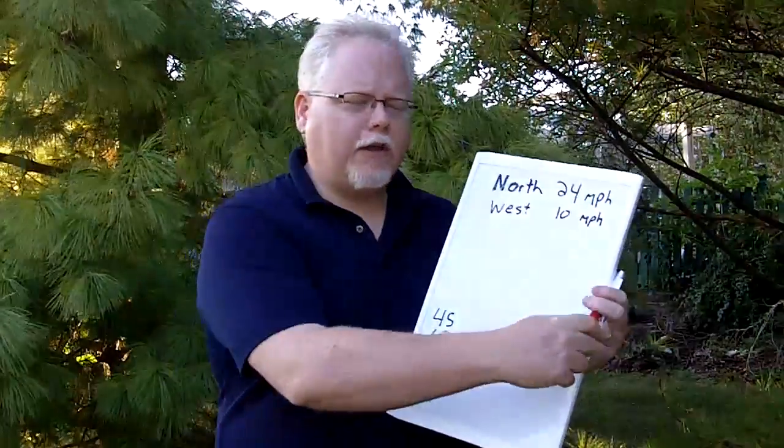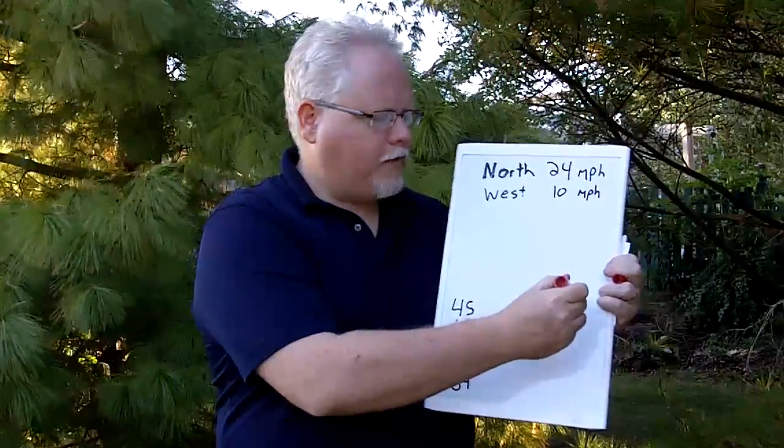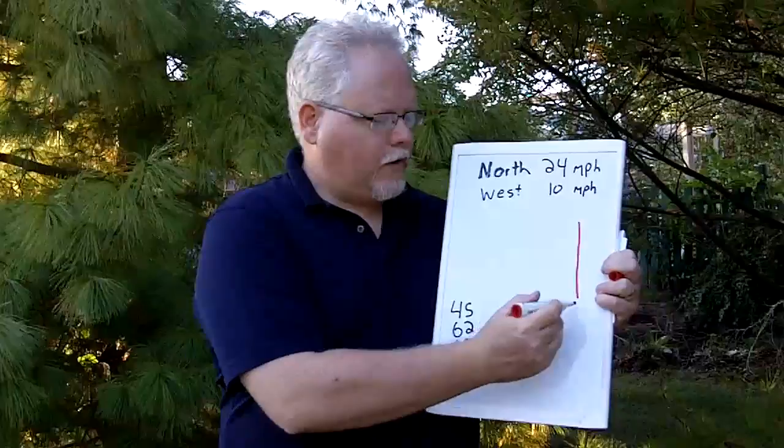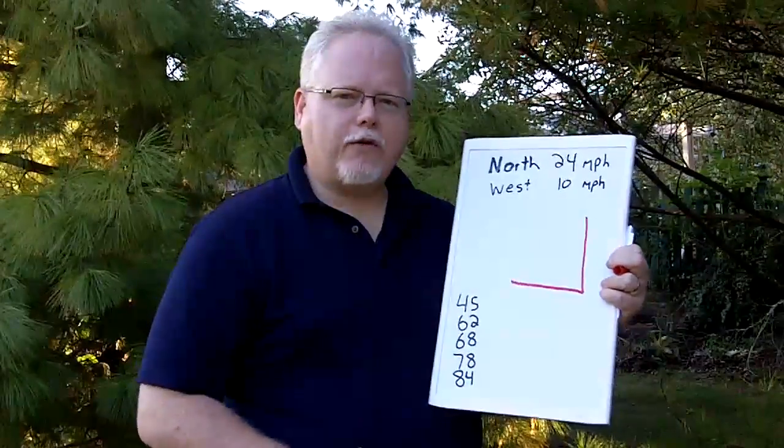So let's just take a look at this. This is a classic triangle question because if this guy starts here and he goes north for three hours and he goes west for three hours, then what we have is a hypotenuse.